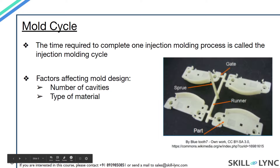To explain the next few factors, I will first explain what runners and gates are. From the nozzle at the end of the injection barrel, the material first enters the sprue — a large channel in the mold which receives the molten material from the nozzle. This sprue channel gets divided into a number of smaller channels called runners. The runner carries the molten material to each individual section of the mold, and the connecting channel between the runner and the part is called the gate.